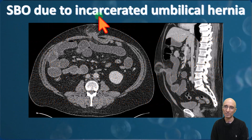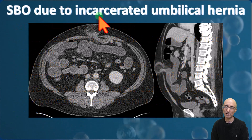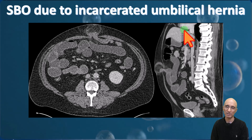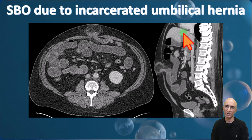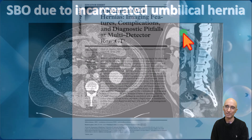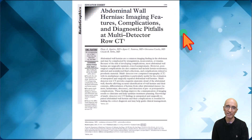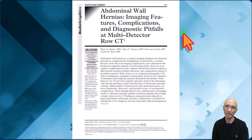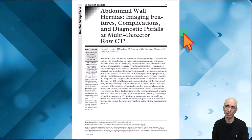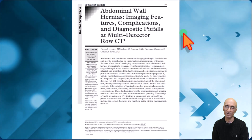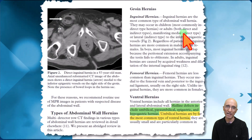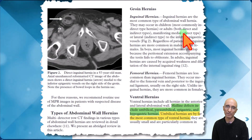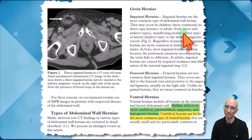So our patient had small bowel obstruction due to an incarcerated umbilical hernia. This is a nice review article published in Radiographics on abdominal wall hernias, and I will highlight a few salient points from this article.